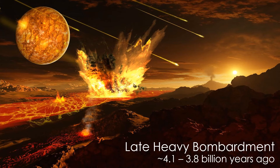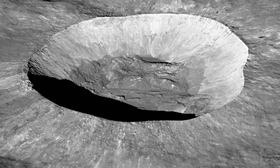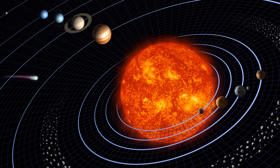One of the most significant events in the Hadean eon may have been the late heavy bombardment. Scientists speculate there was an interval between 4.1 and 3.8 billion years ago when the Earth and other rocky planets of the solar system were impacted by a disproportionately high number of asteroids. This theory originates with studies of rocks and craters on the moon done following the Apollo moon landings. The study suggests that most lunar impact structures formed during a specific window of time — the late heavy bombardment. If this theory is correct, the bombardment may have been caused by the migration of the giant planets to the outer parts of the solar system. As Jupiter, Saturn, and the others passed through the asteroid belt, they may have scattered asteroids, setting them on a collision course with the rocky inner planets like Earth.